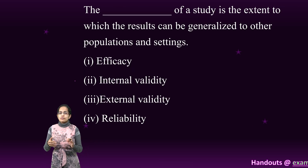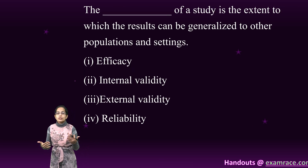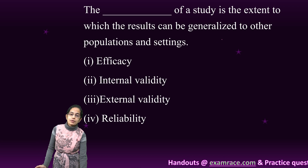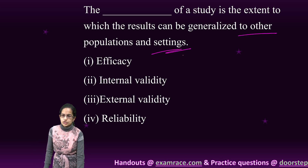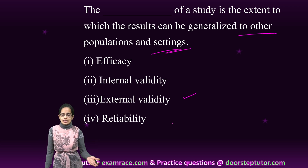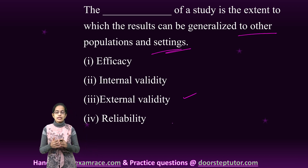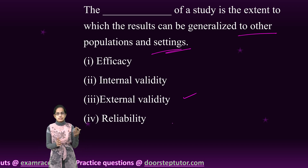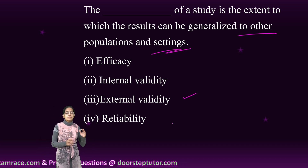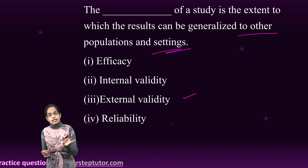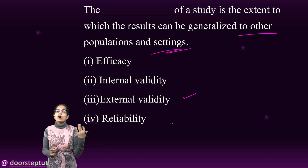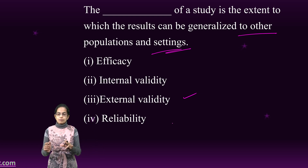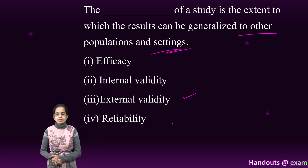The next question is about understanding results that can be generalized to other populations. This is external validity. When we talk about other populations, it is external validity; if it is specifically about other settings, we call it ecological validity. So in this case, external validity is the answer.